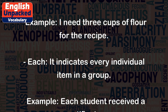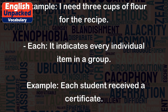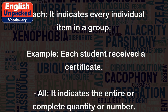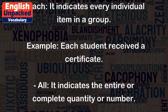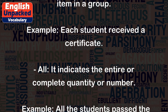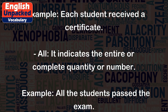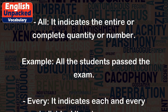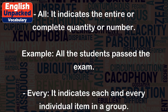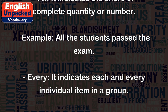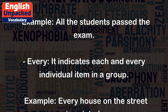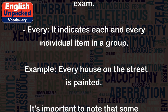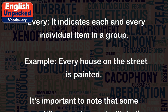'Each' indicates every individual item in a group. Example: Each student received a certificate. 'All' indicates the entire or complete quantity or number. Example: All the students passed the exam. 'Every' indicates each and every individual item in a group. Example: Every house on the street is painted.